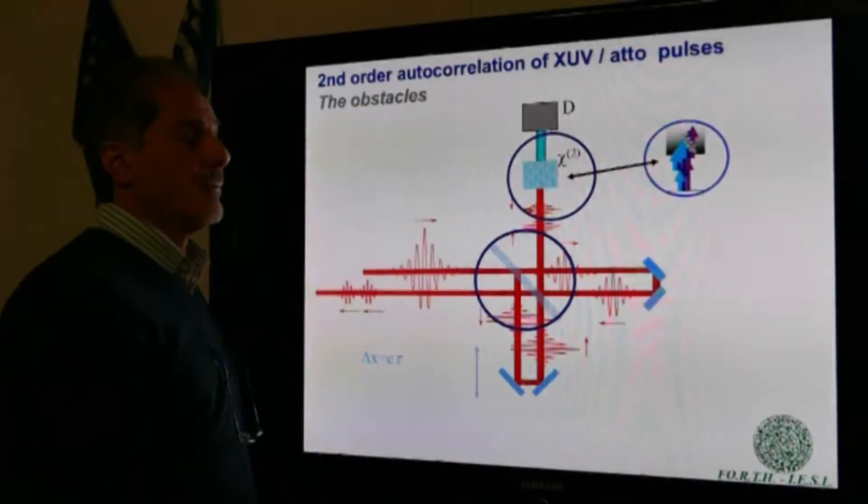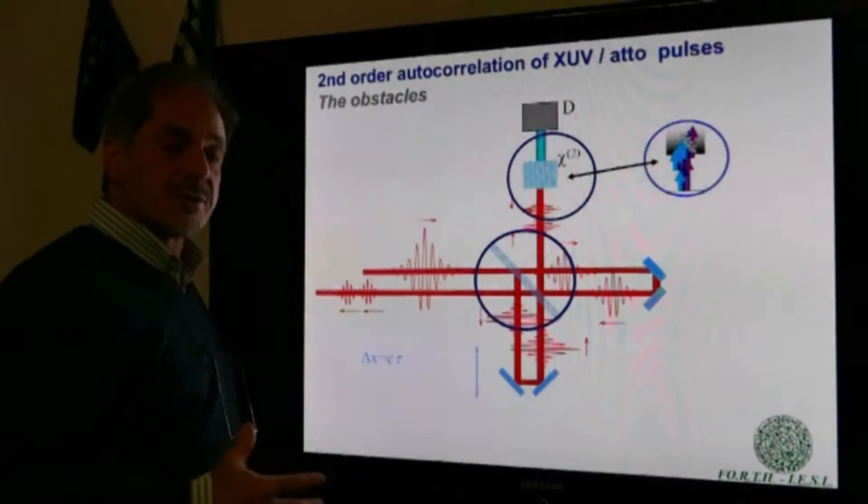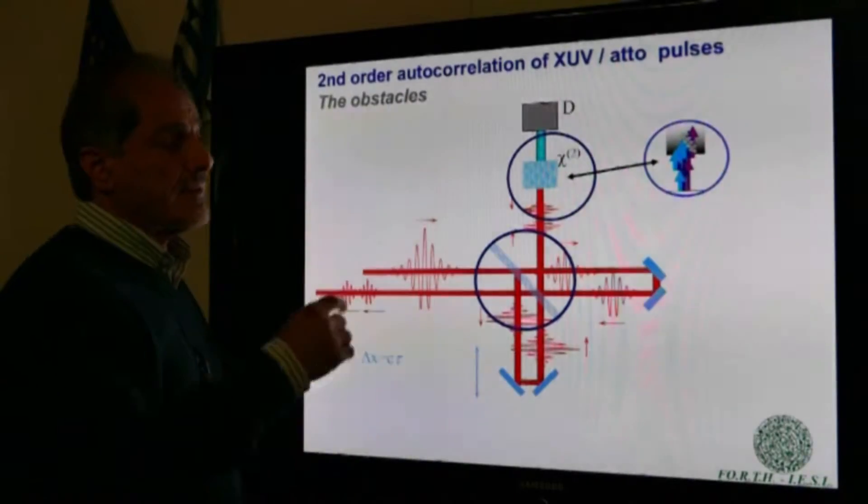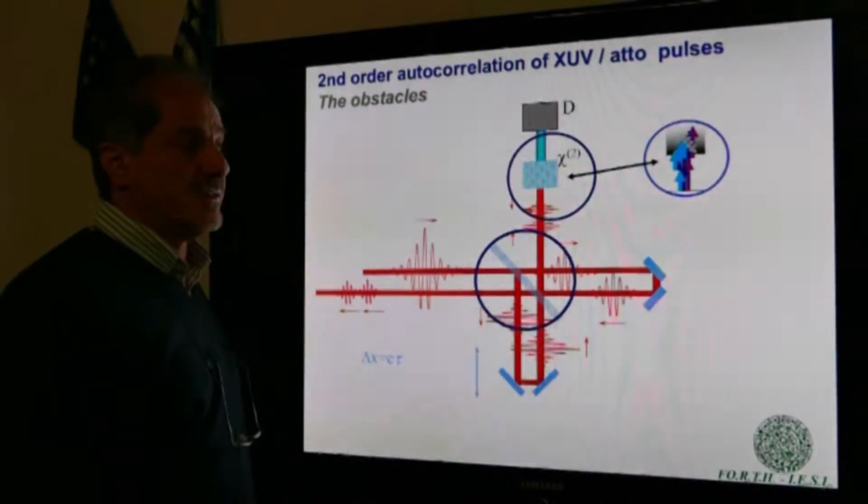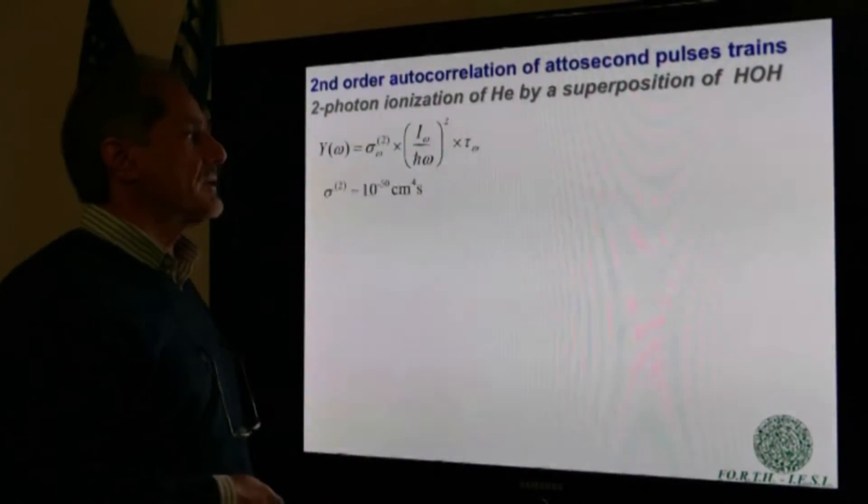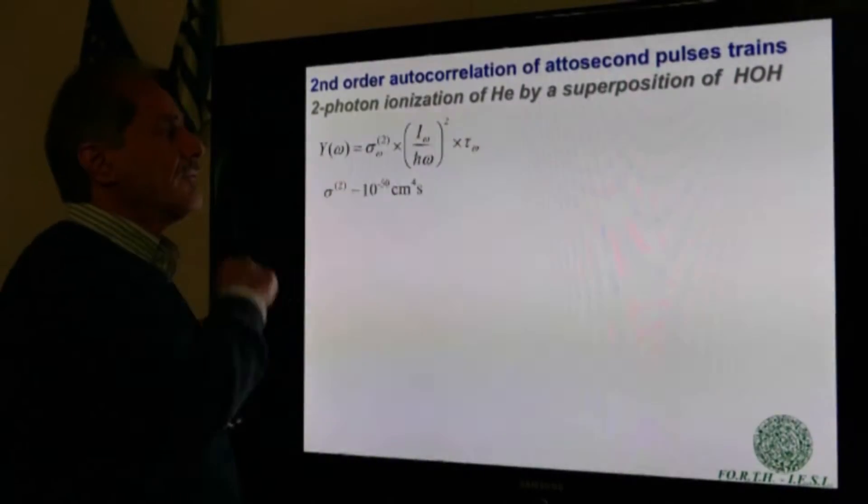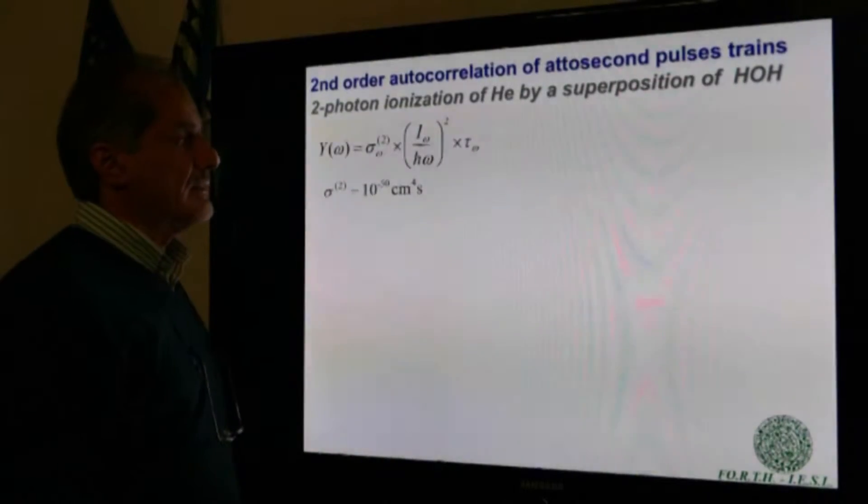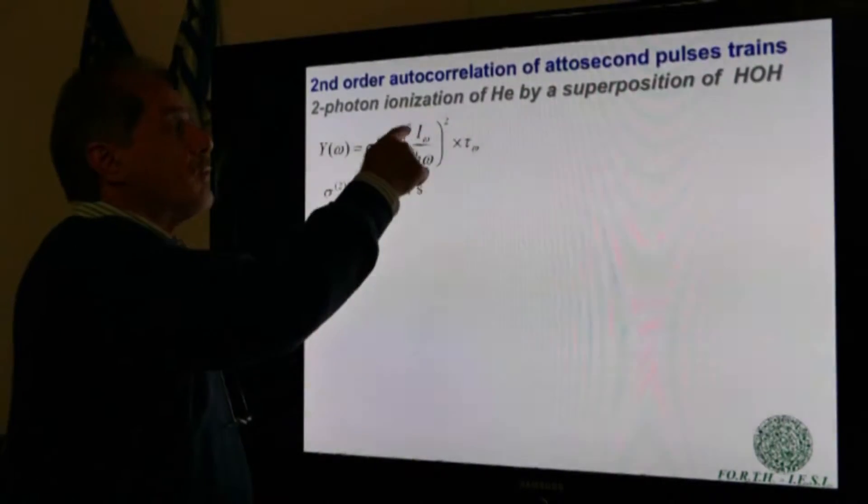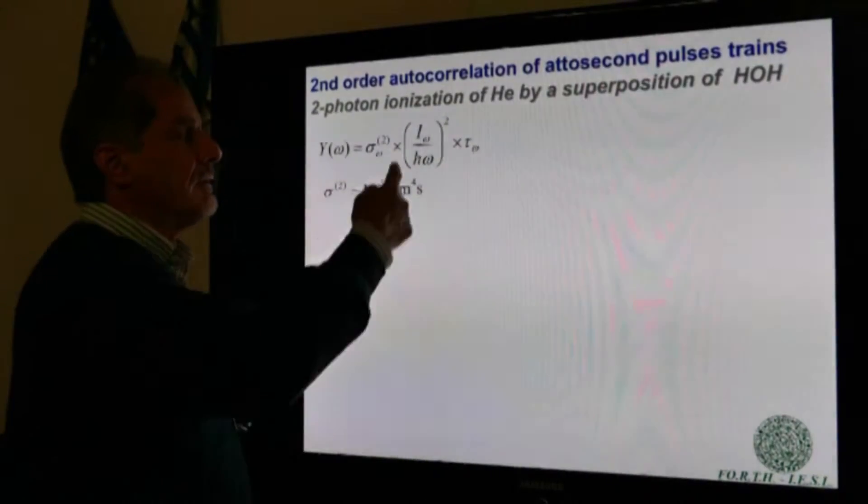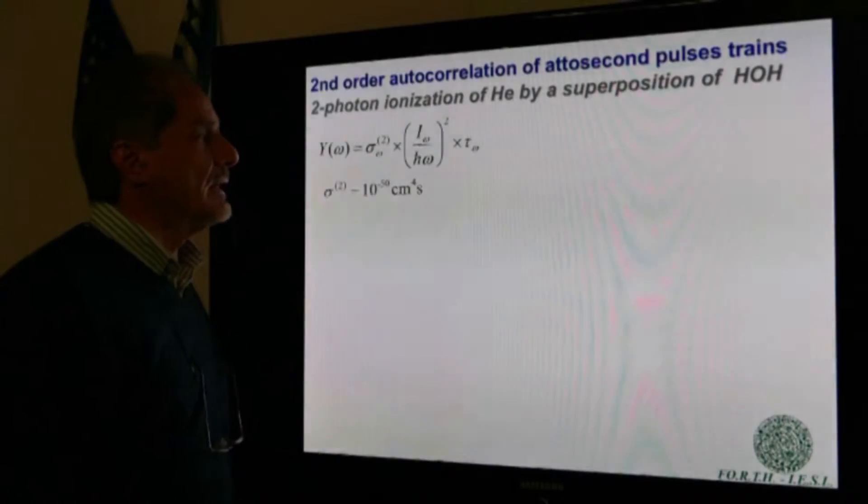The solution to the second problem is to use a different second-order process, and the one that is these days used is two-photon ionization of an atom. Two-photon ionization is a nonlinear process, the yield of which is proportional to the duration of the ionizing radiation times the flux of the radiation to the second power,